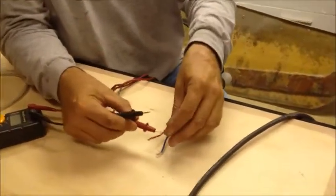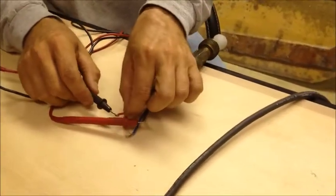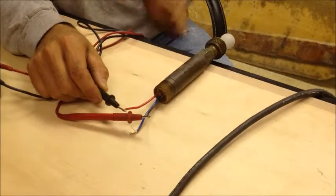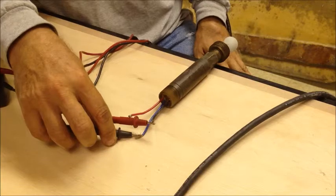Usually the blacks are the common, so we would hook one end of our probe to a black wire and we check. So this must be the normal open wire and this blue wire is the normally closed.